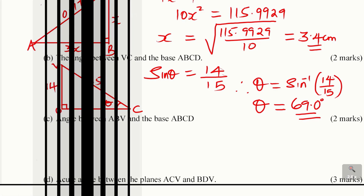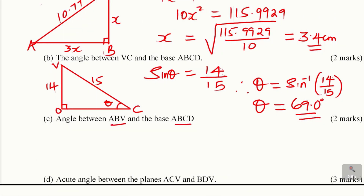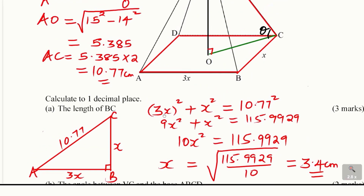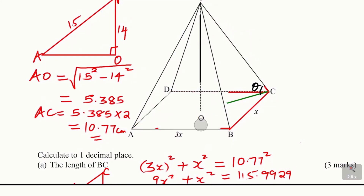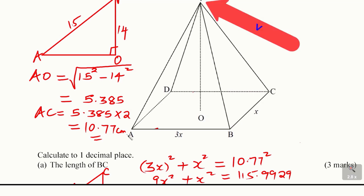Let's go to part C: the angle between plane ABV and plane ABCD. To get the angle between two planes, we draw a perpendicular from V to the line of intersection AB in plane ABV. Then in plane ABCD we draw another perpendicular to line AB from a point on that line.